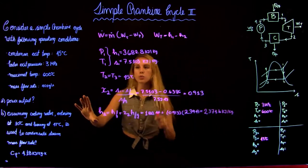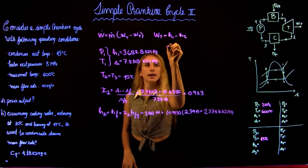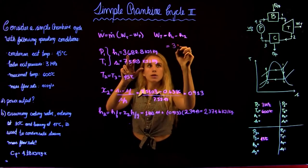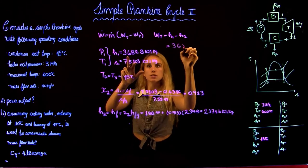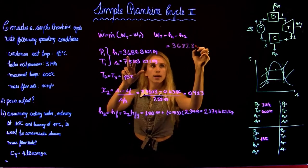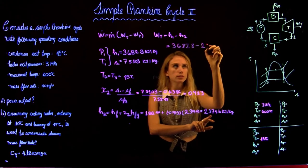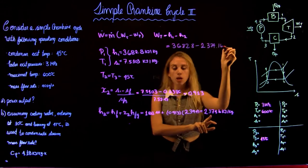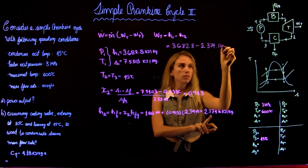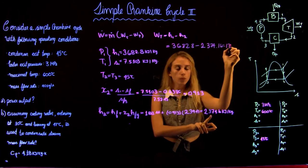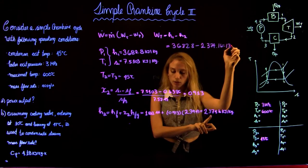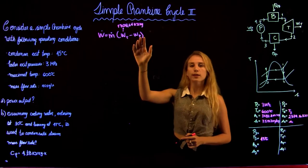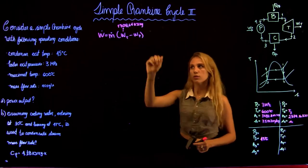Now that we have H1 and H2 we can go ahead and calculate the work of the turbine: Wt = 3682.8 − 2374.16, which is equal to 1308.64 kJ/kg. Now that we have the work of the turbine, we're going to calculate the work of the pump.